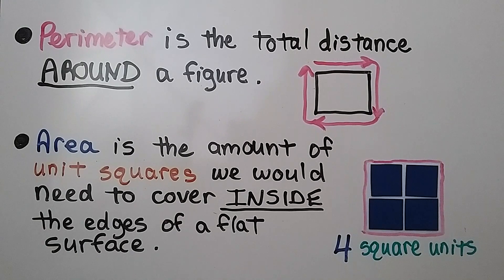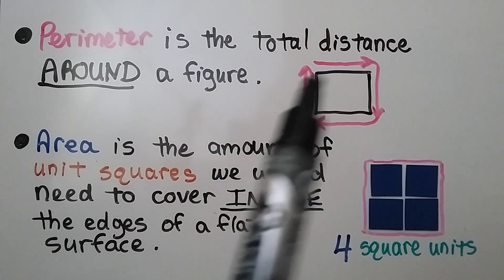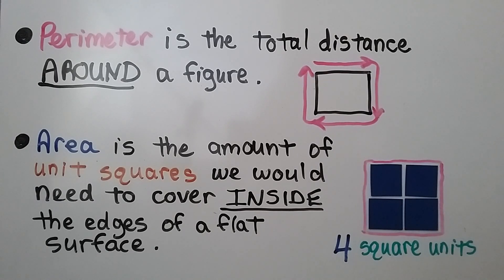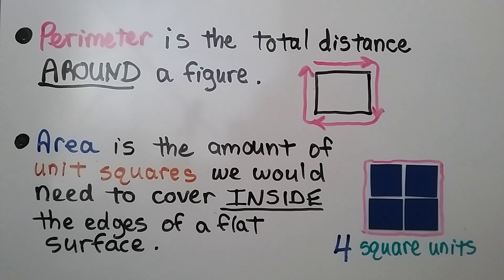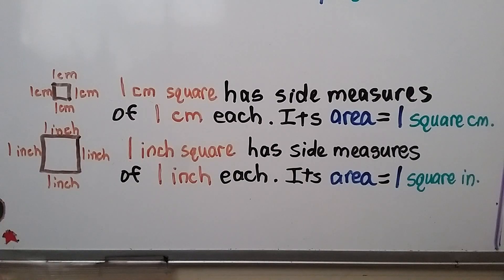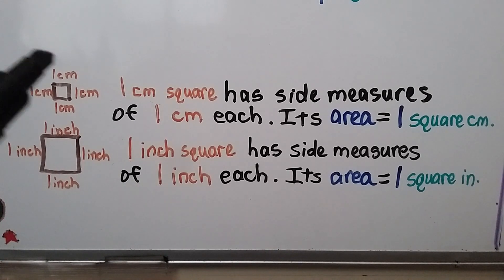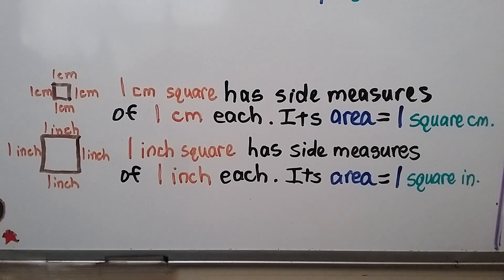As we've learned in previous lessons, perimeter is the total distance around a figure — that's a clue word for perimeter: around. Area is the amount of unit squares we need to cover inside the edges of a flat surface. This square is four square units. This little square here is one centimeter square — the unit we're using is centimeters — so it has sides of one centimeter each, and its area is equal to one square centimeter.